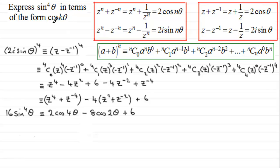So all we need to do now is to get sine to the four theta in terms of multiple angles of the form cos k theta - just divide by sixteen. So therefore we have sine to the power four of theta is identical to two sixteenths cos of four theta minus eight sixteenths cos two theta and then plus six divided by sixteen.